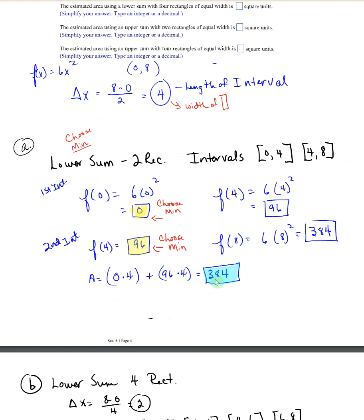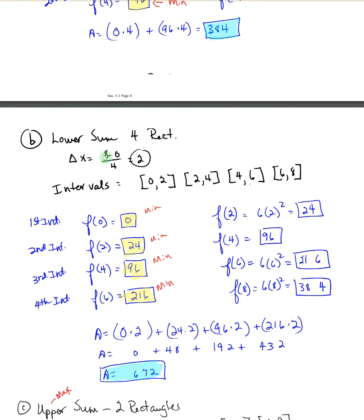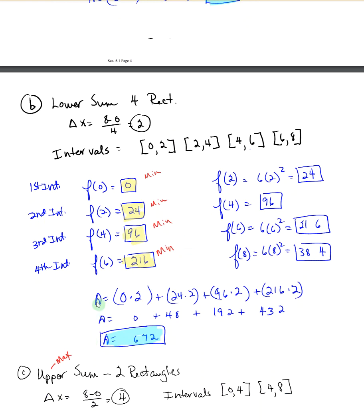If we change and do the lower sum with 4 rectangles, the difference is in our intervals. Delta x is now 8 minus 0 but dividing by 4 rectangles. So the width of each rectangle is 2. The intervals then become 0 to 2, 2 to 4, 4 to 6, 6 to 8. You do f of 0, f of 2, f of 2, f of 4, 4, 6, 6, 8. You are still looking for the minimums. For the area we have 0 times 2, 24 times 2, 96 times 2, 216 times 2. Add up all of those and you get an area of 672.